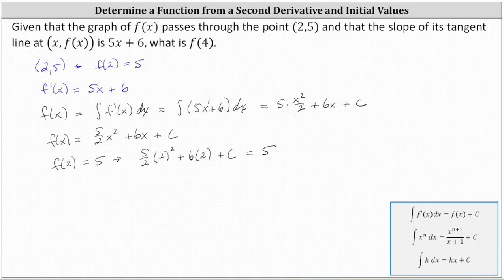And now we can solve for c. Two squared is 4, five halves times 4 is 10, giving us 10 plus 12 plus c equals 5. To solve for c, we subtract 22 on both sides, giving us c equals 5 minus 22, indicating c equals negative 17.